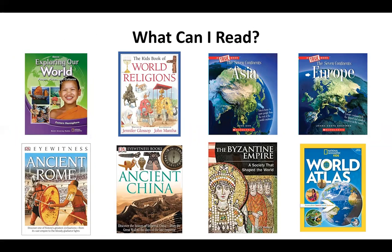This first book is Exploring Our World: People, Places, and Cultures. In this book, you're going to get a really great overview of the eastern hemisphere, the types of people who live there, and how their geography affects their culture. Next, I recommend the Kids Book of World Religions. This gives you such an exciting and fascinating overview into the world religions and how they are similar and how they are different.